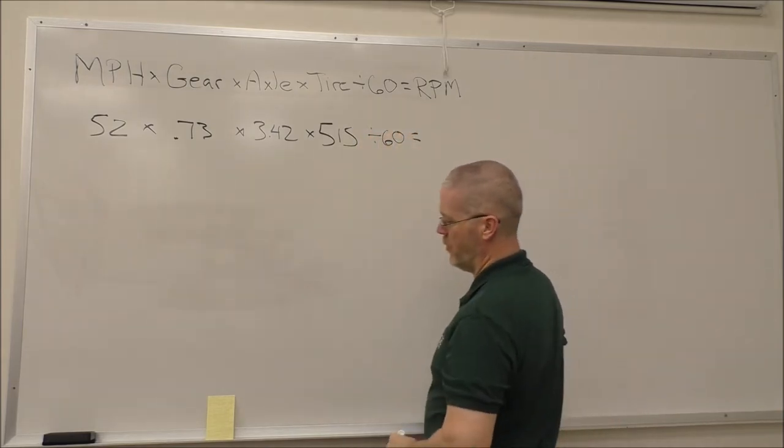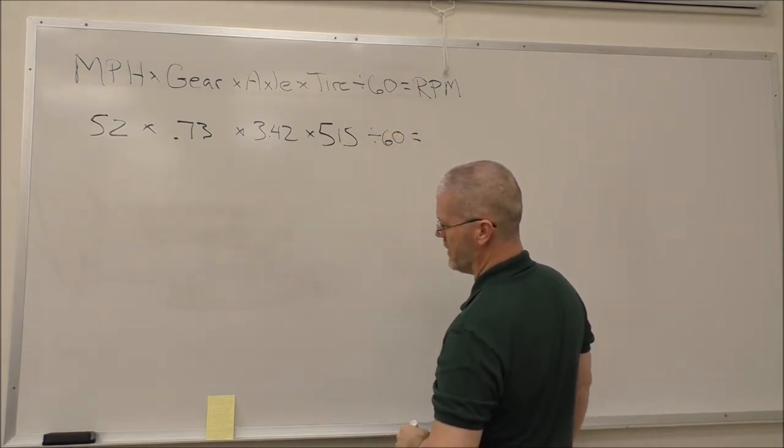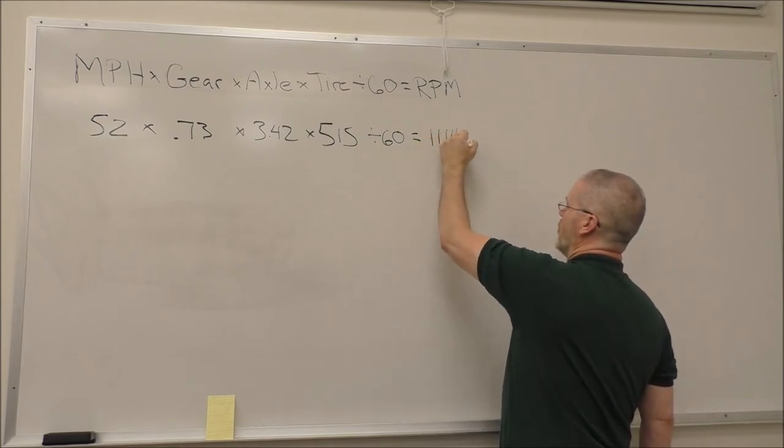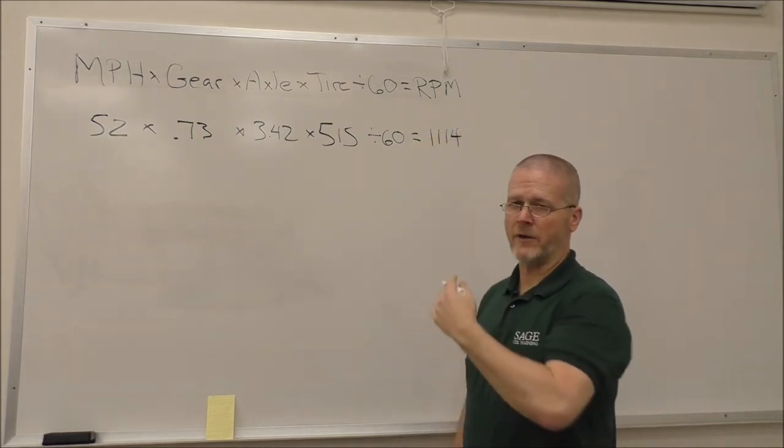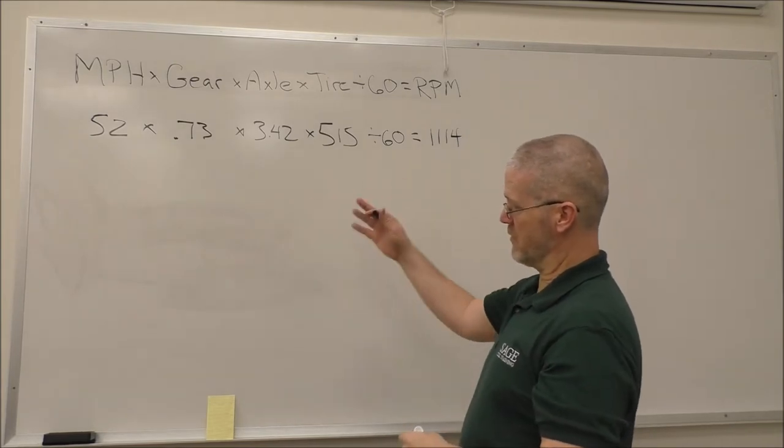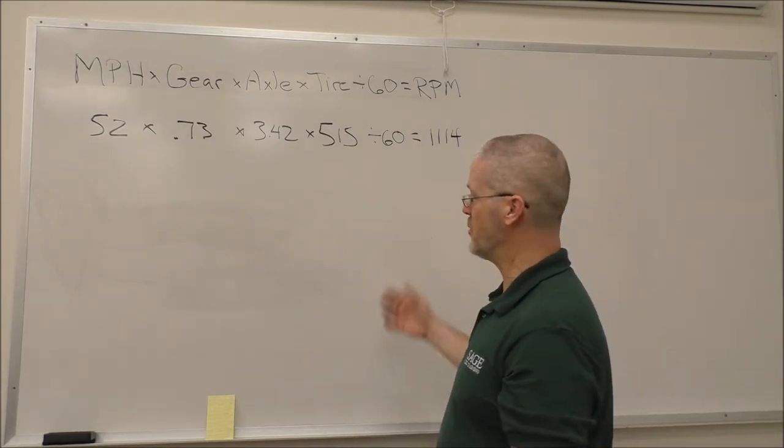We're going to end up with an RPM figure of 1,114. Round it off, of course. If you actually do the arithmetic on a calculator, there will be decimal places.